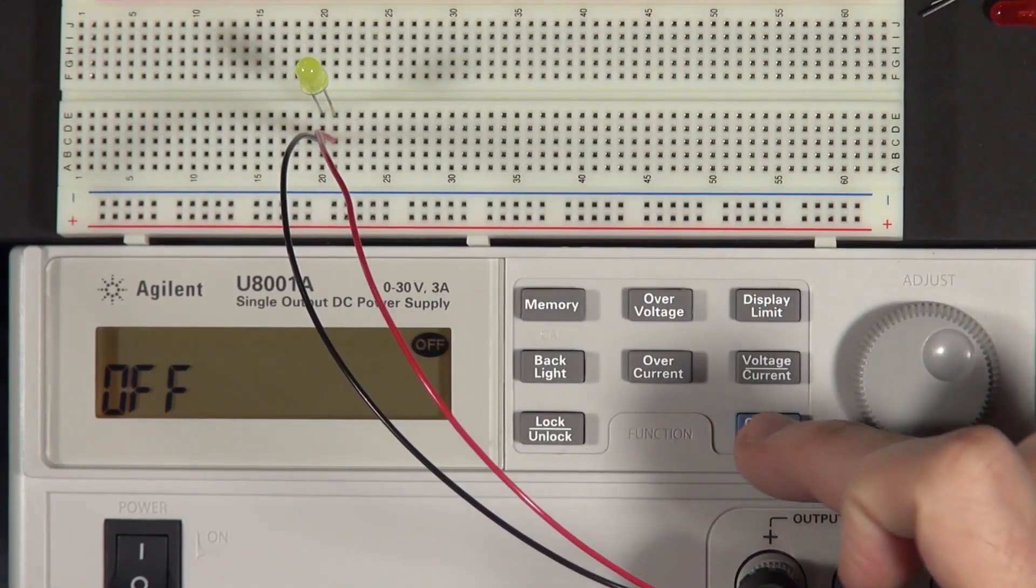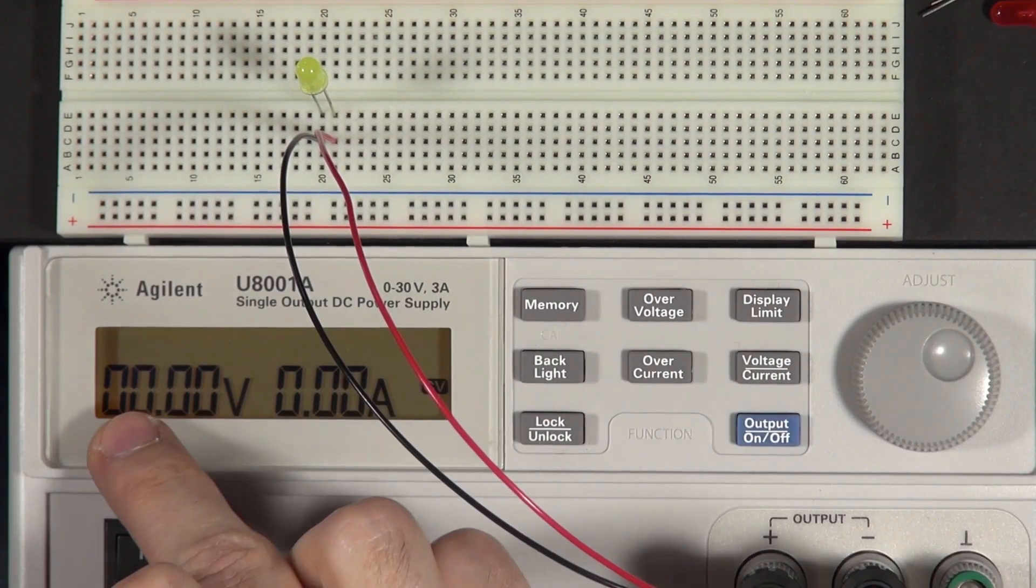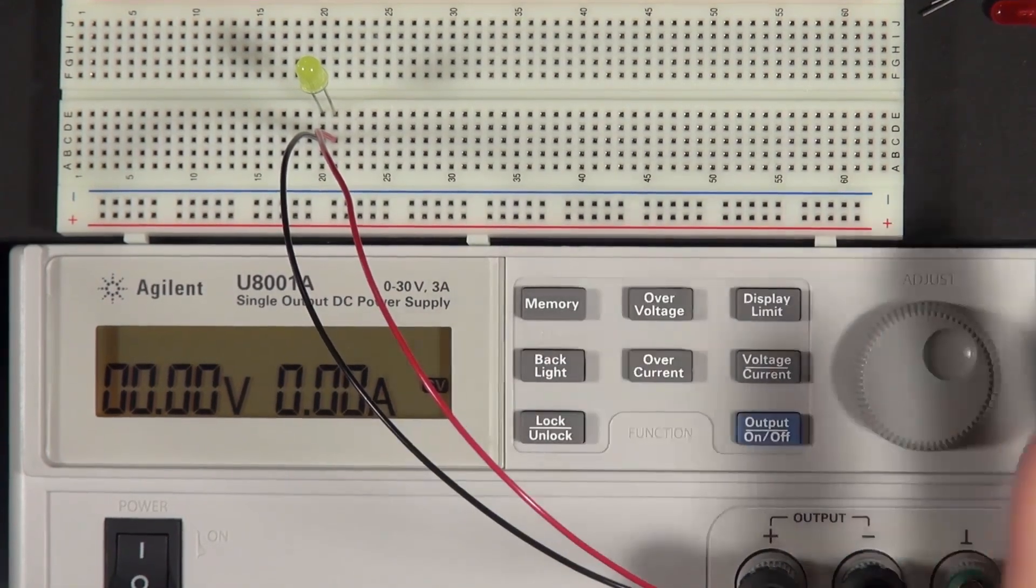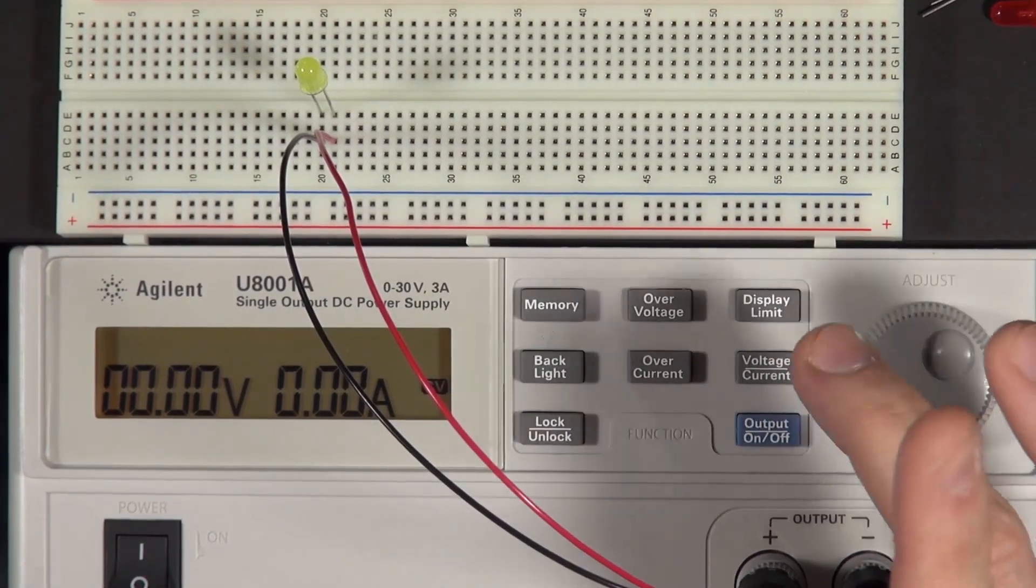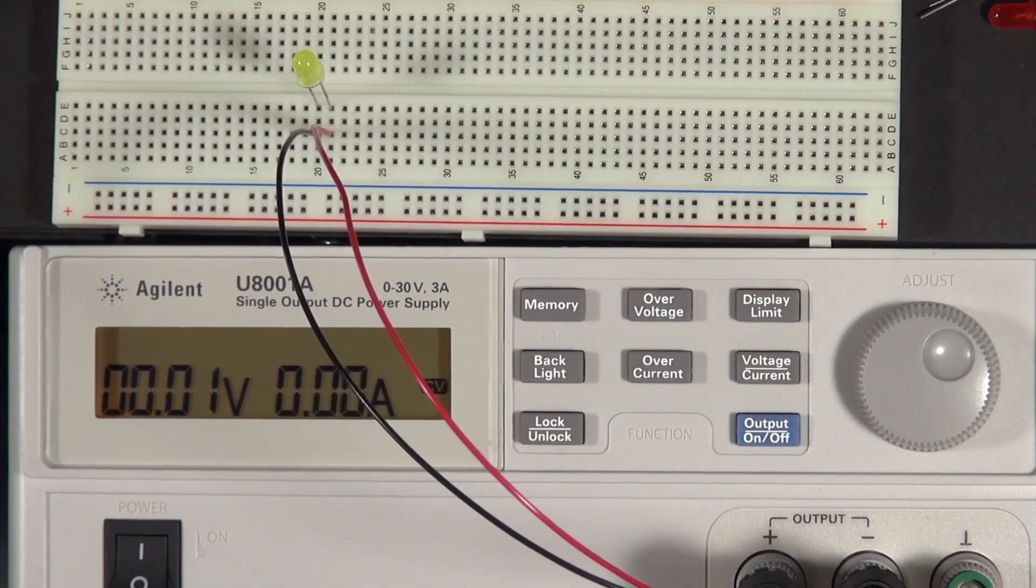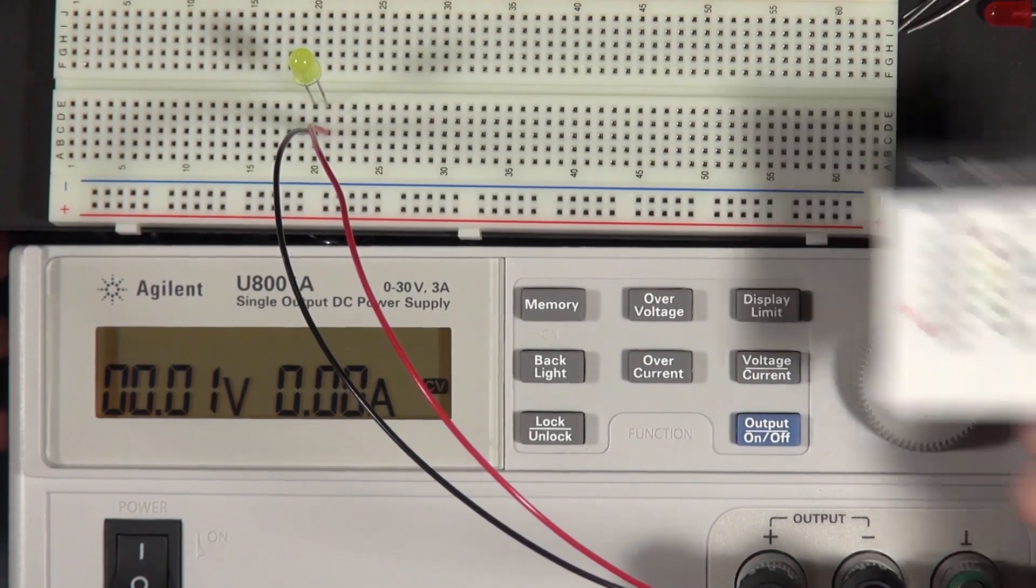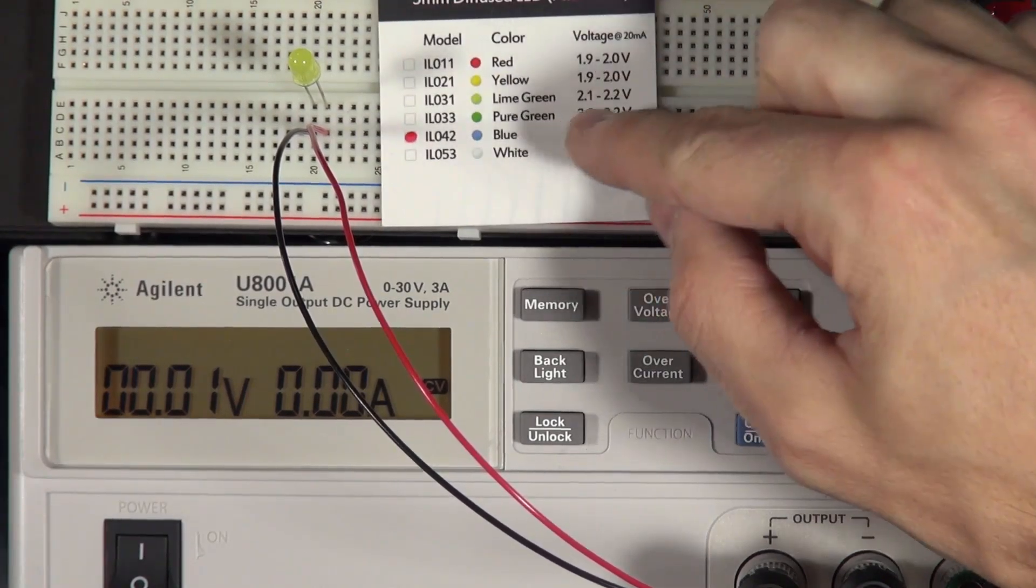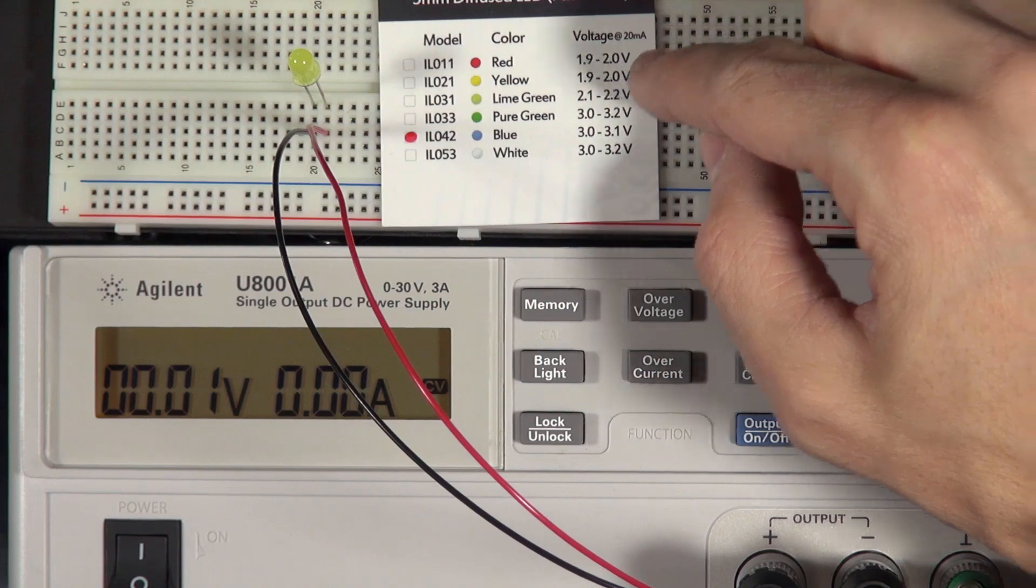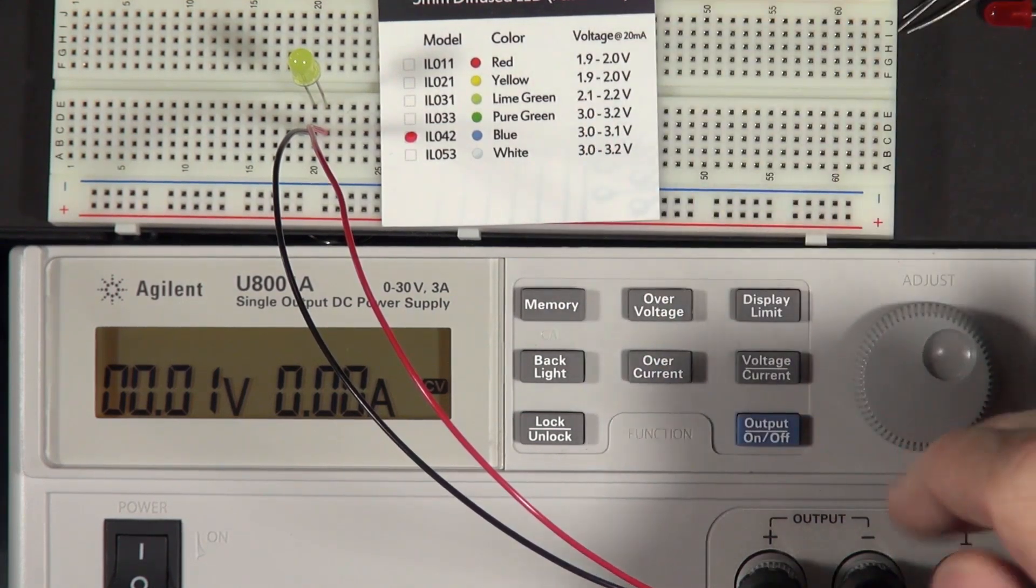But what we can do is we can turn the power source on, and right now it's set to zero volts. And this power source is a nice laboratory power source that gives me quite a bit of control over the voltage. And so if we look back at what the manufacturer said, it says for the yellow LED, the voltage at 20 milliamps should be 1.9 to 2 volts.